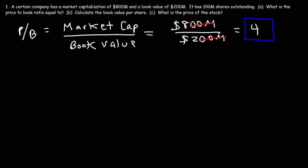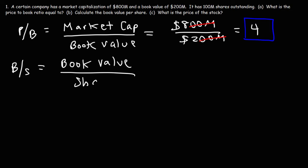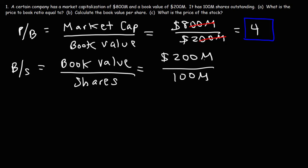Now let's move on to part B: calculate the book value per share. The book value per share — let's call it B over S — is going to equal the book value of the entire company divided by the number of shares outstanding. So the book value is $200 million, and it has 100 million shares outstanding. So 200 divided by 100 is 2, giving us a book value of $2 per share.